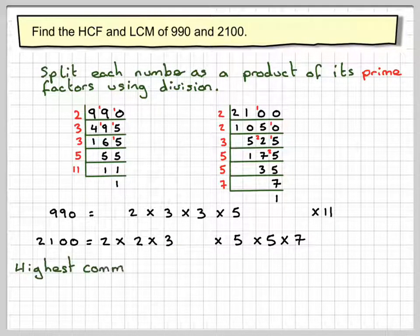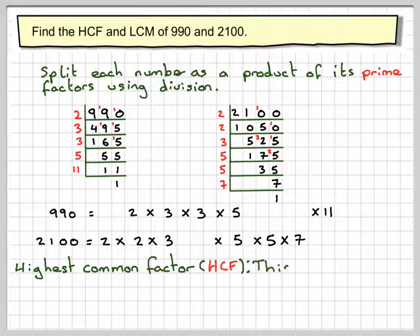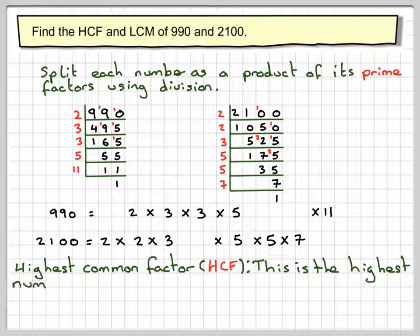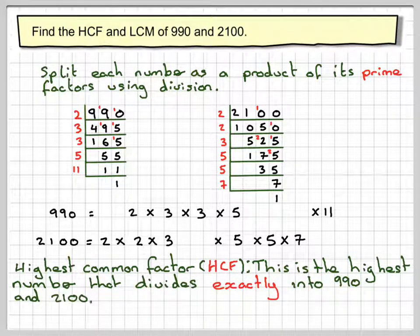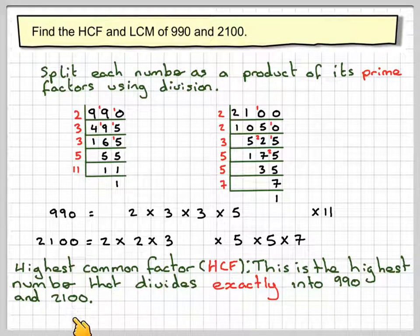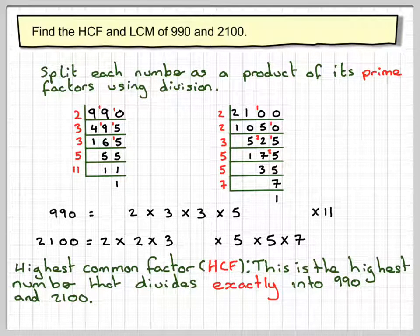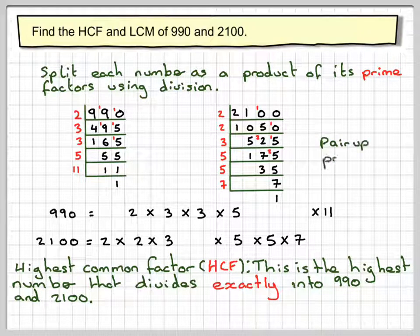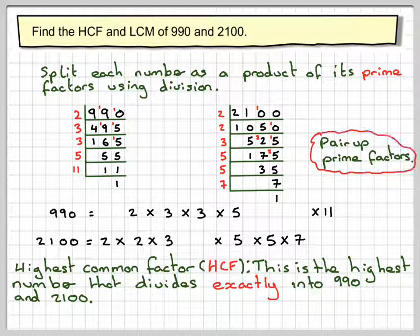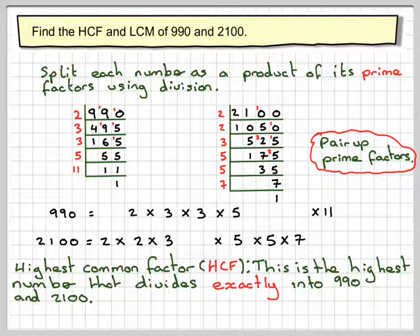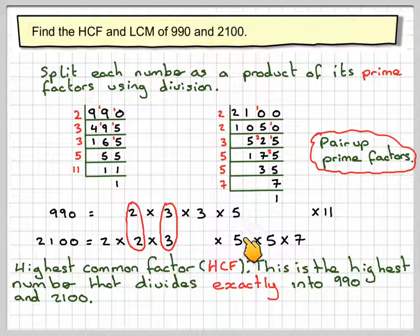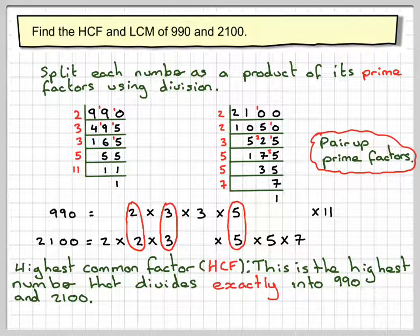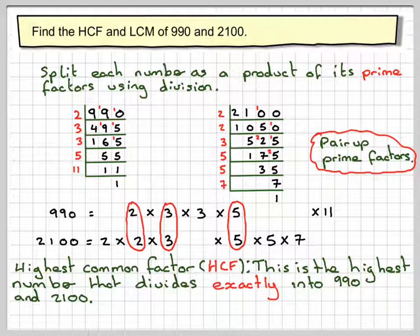To find the HCF, the highest common factor, what does it mean? This is the highest number that divides exactly into both 990 and 2,100. You get that by pairing up prime factors. We can see we've got a 2 and a 2, so we'll put a ring around that.